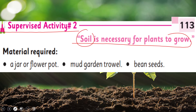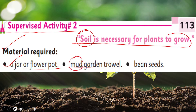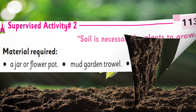The materials we need are: a jar or a flower pot, mud, a garden trowel — that means we have to take a plant from the garden using the trowel and put it in the flower pot — and we also need bean seeds.